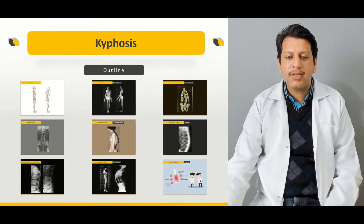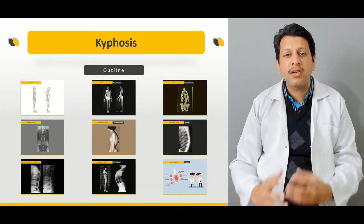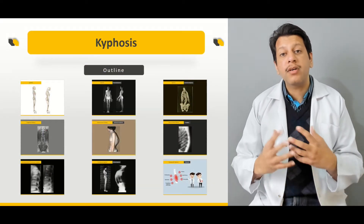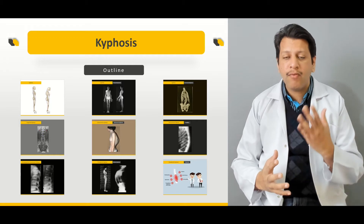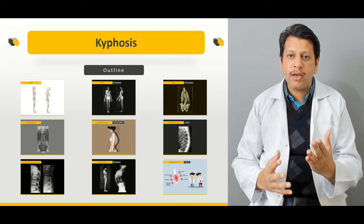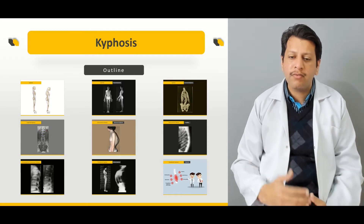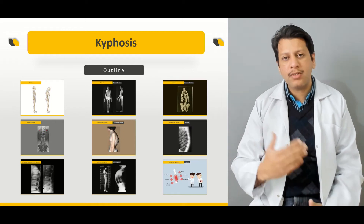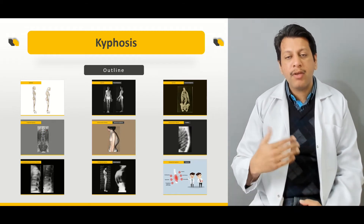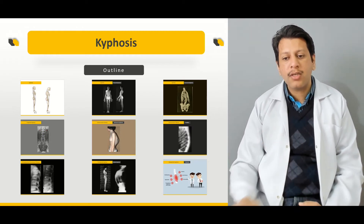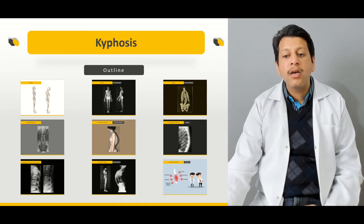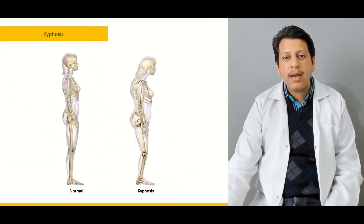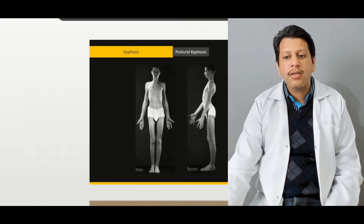We will be discussing what are the different types of curves we have in the spine, and when looking at the spine, how it actually sagittally balances itself — what are the primary curves and what are the secondary curves. Then we will briefly discuss what is postural kyphosis as well as structural kyphosis.